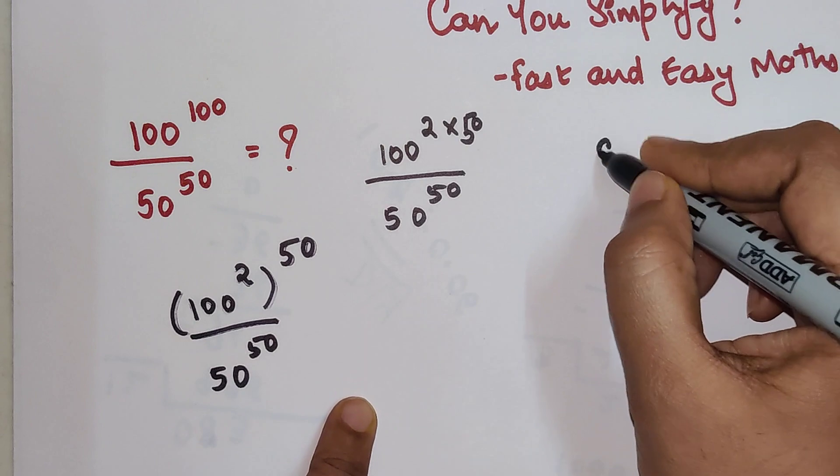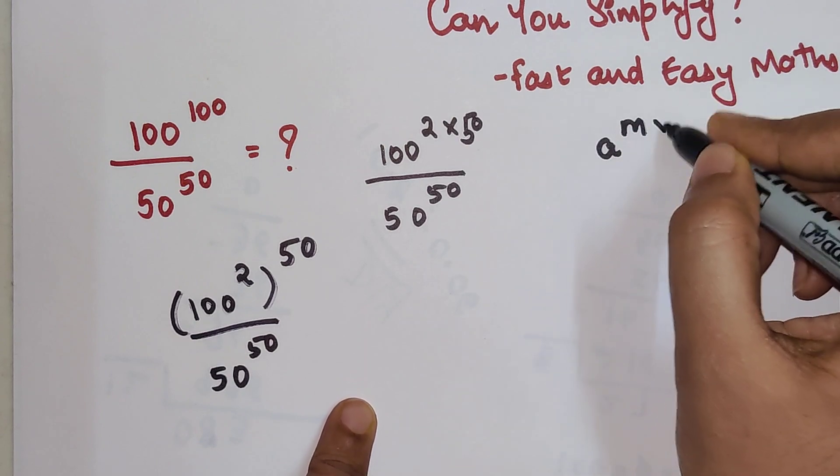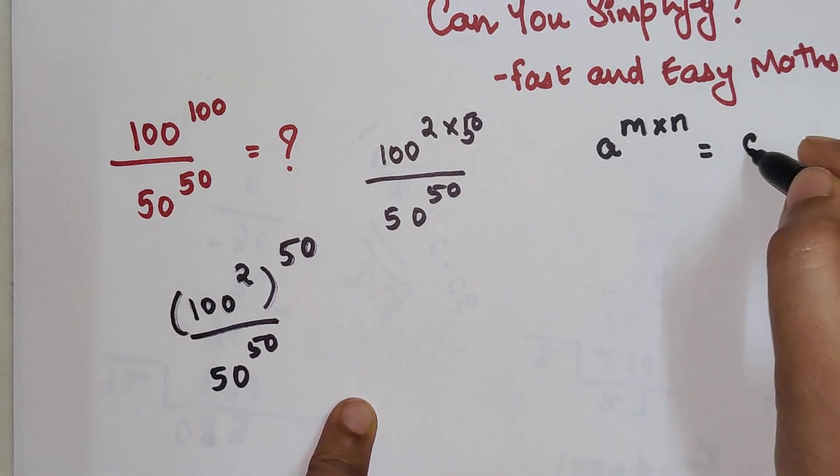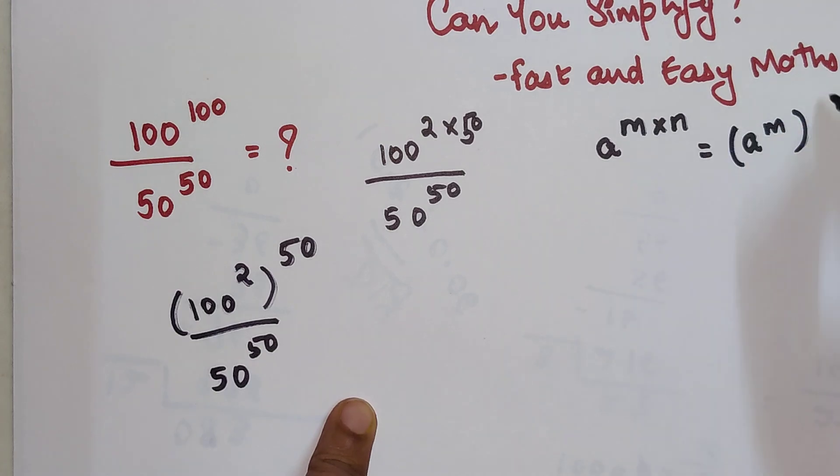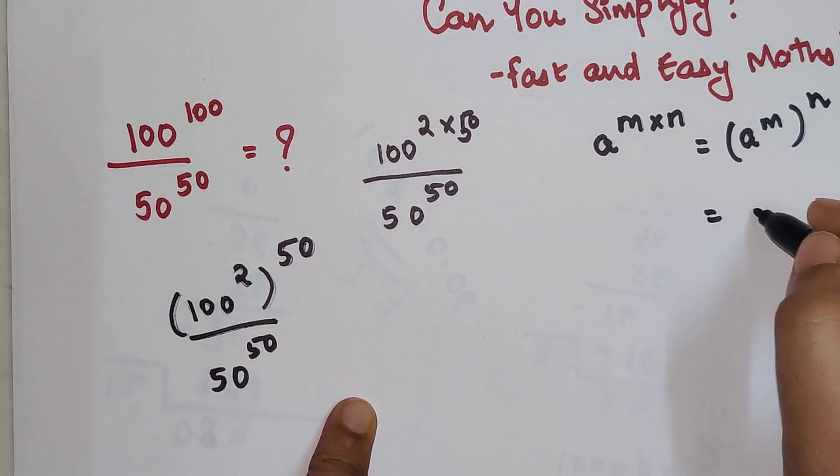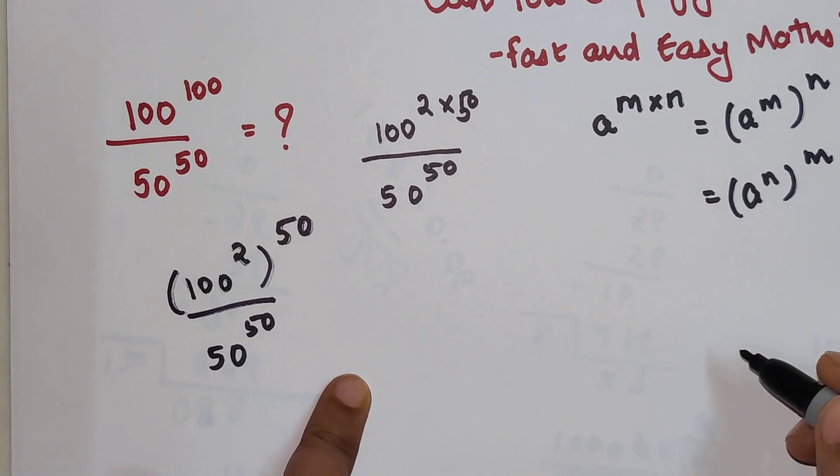Please understand here I am using the law which is: a raised to m times n is nothing but a raised to m the whole raised to n. It can also be written as a raised to n the whole raised to m.